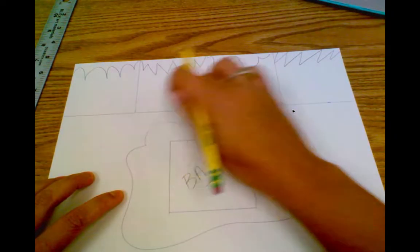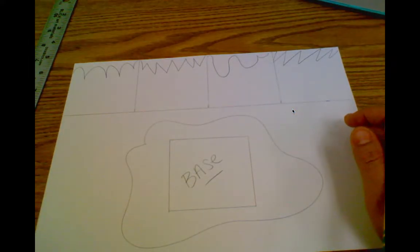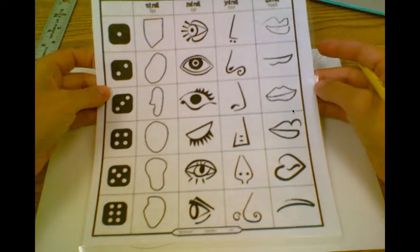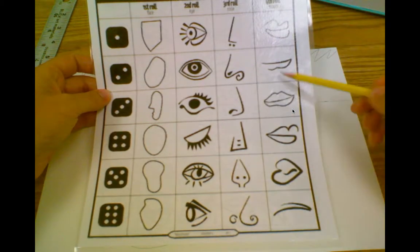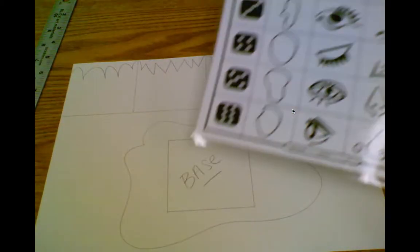Once that's done I can start to add my faces in. So I have papers at my table. These are just to give you ideas for different eye shapes, noses, mouths. You can use them.